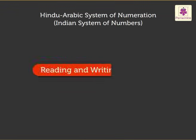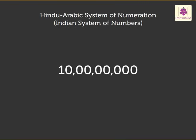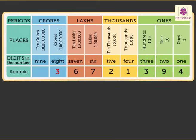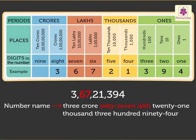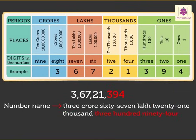Now let us learn to read and write numbers using the Hindu-Arabic system. Remember, commas are inserted from the right after three digits first, then after every two digits. Look at the given eight digit number: 3,67,21,394. We write it as three comma sixty-seven comma twenty-one comma three nine four. It is read as three crore sixty-seven lakh twenty-one thousand three hundred ninety-four.